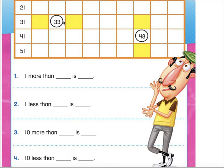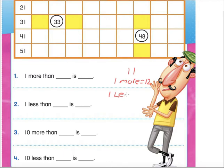Good afternoon everyone. On the last video we were talking about how to take a number — like say we had the number 11 and we wanted one more. That would be what's one more than 11? Well it's 12. Or we would say what is one less. What's one less than 11? If we're looking at a number line we're going to jump backwards one, and one less is 10.